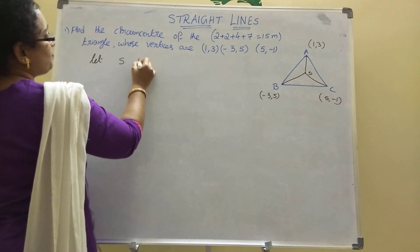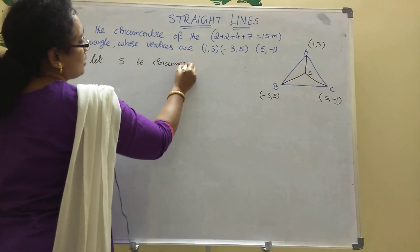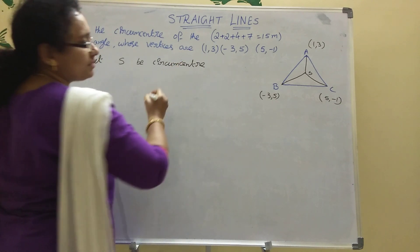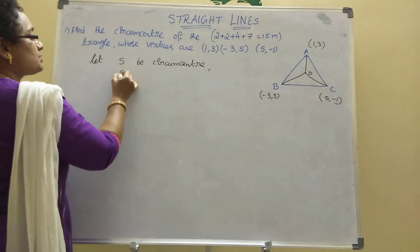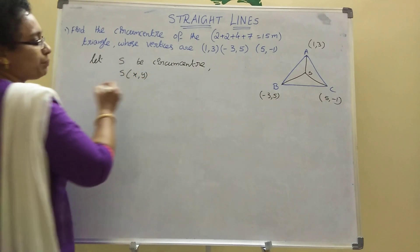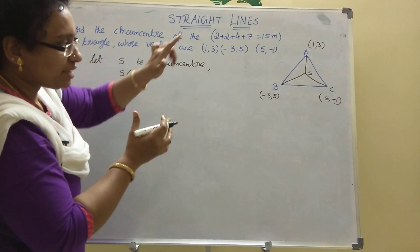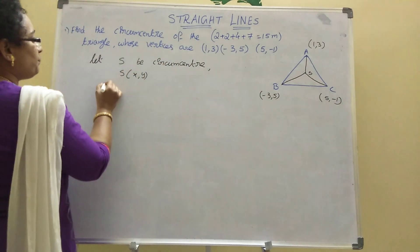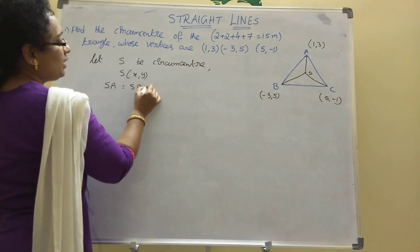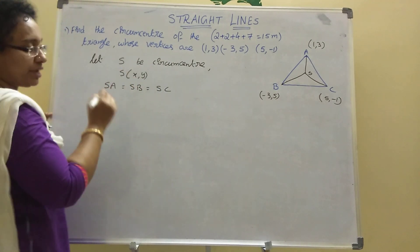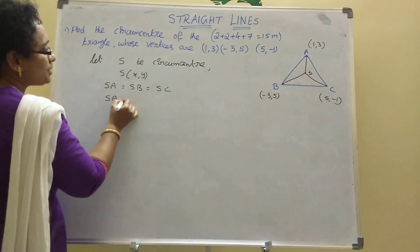We are taking the circumcenter of the triangle as S(x, y). Now we will prove that SA = SB = SC. First, we are taking SA = SB.